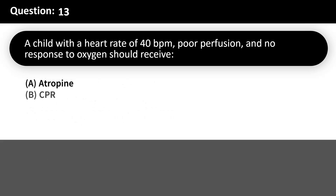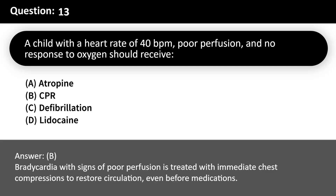A child with a heart rate of 40 BPM, poor perfusion, and no response to oxygen should receive: A. Atropine. B. CPR. C. Defibrillation. D. Lidocaine. Answer: B. Bradycardia with signs of poor perfusion is treated with immediate chest compressions to restore circulation, even before medications.